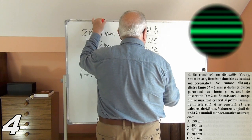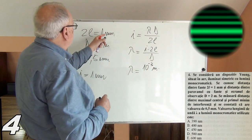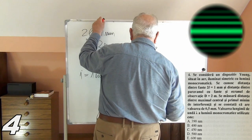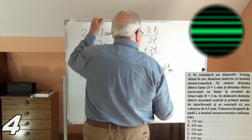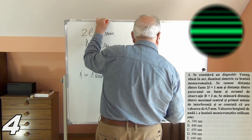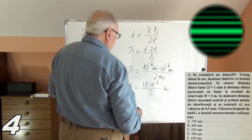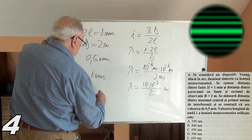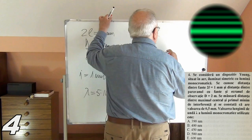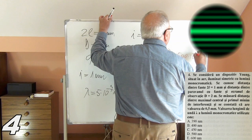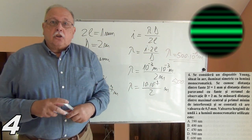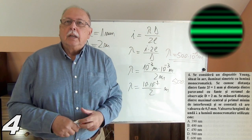Lambda equals I times 2L divided by D: lambda = (10⁻³ m) times (10⁻³ m) / (2 m) = 10⁻⁶ / 2 = 5 times 10⁻⁷ m = 500 nm. The correct answer is D — 500 nanometers.